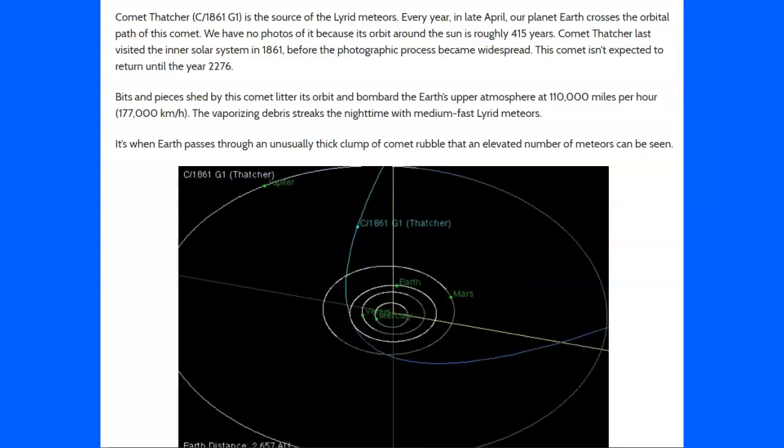What they're saying is Thatcher is the source of the Lyrids meteors. Every year in late April, our planet Earth crosses the orbital path of the comet. We have no photos of it because its orbit around the sun is roughly 415 years. Thatcher last visited the inner solar system in 1861. That's where the name comes from. That's before the photographic process became widespread. This comet isn't expected to return until the year 2276.